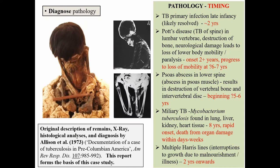In 1973, Allison and colleagues identified evidence for pulmonary and extra-pulmonary tuberculosis, Pott's disease, and a psoas abscess, as well as multiple Harris lines acquired from early childhood — indicators of arrested growth suggesting chronic poor health. The proposed disease timeline showed initial infection around age two, TB of the spine leading to lower body paralysis around age six or seven, and death within weeks from blood-borne spread of TB to various organs around age eight.